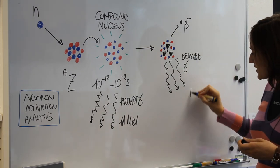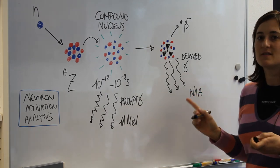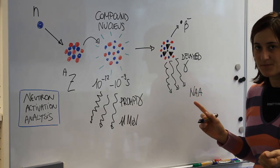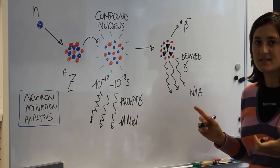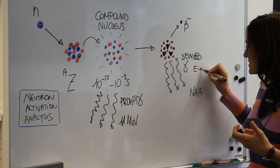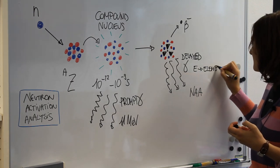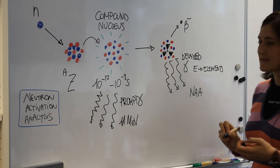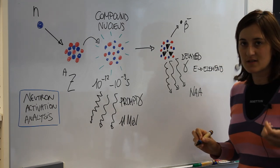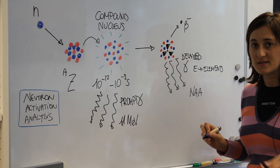NAA works with this delayed gamma radiation. The information we gain from this gamma radiation is the energy of the gamma rays that are characteristic for each element. Through the energy we can determine the elements inside a sample, and the intensity of these gamma rays are also proportional to the amount of the elements inside a sample.